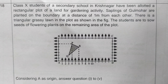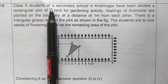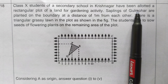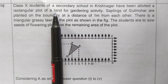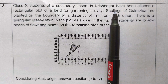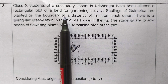Hello dear students, welcome to this YouTube channel. In this video we will discuss a case study based question for class 10. The question states that class 10 students of a country school in Krishnanagar have been allotted a rectangular plot of land for gardening activity. Saplings of Gulmohar are planted on the boundary at a distance of one meter from each other.